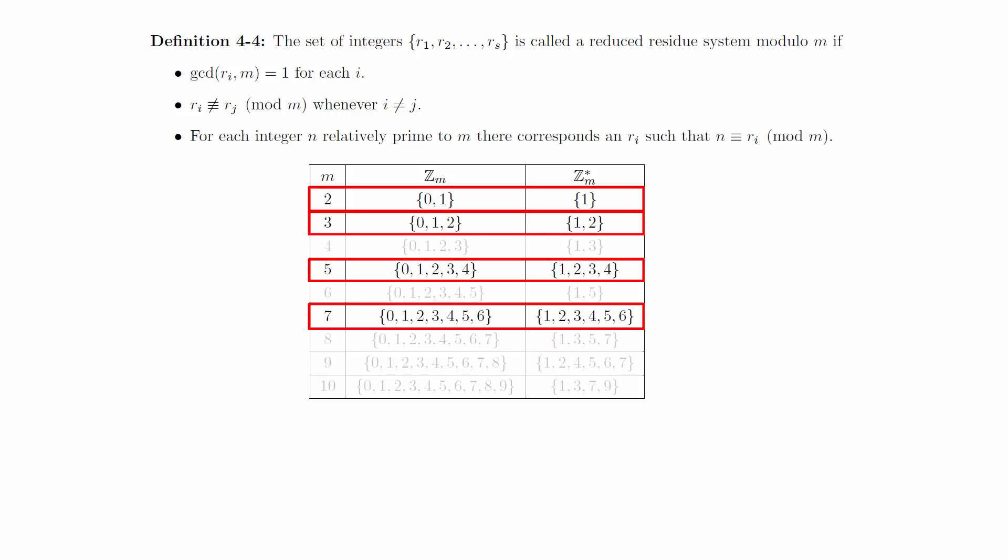Notice that when the modulus is prime that z sub m star is just z sub m with 0 removed. This is one of many patterns that exist in z sub m star. We'll spend some time looking into those a little bit later.